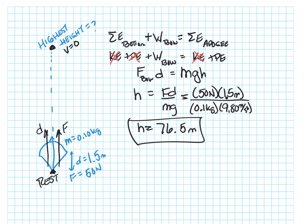That makes sense because all the energy in the bow that's put into the system goes into the arrow to give it its maximum height, where it reaches a final speed of zero.